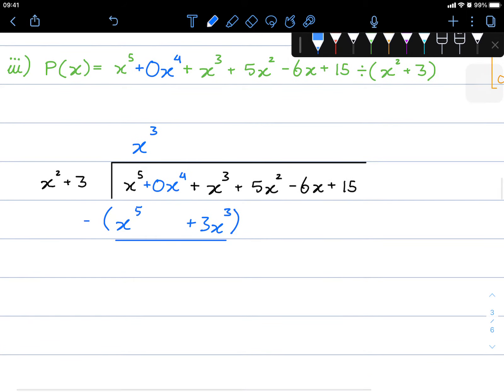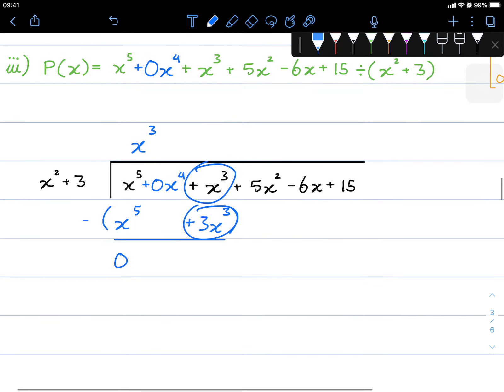Let's move on. We do a subtraction. That goes away. x cubed minus 3x cubed is negative 2x cubed. We borrow the next term.